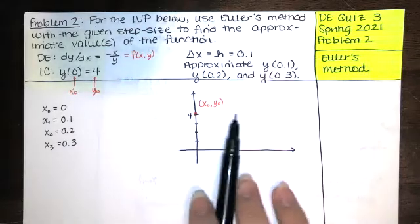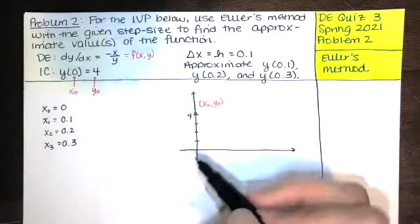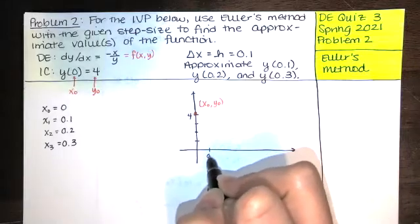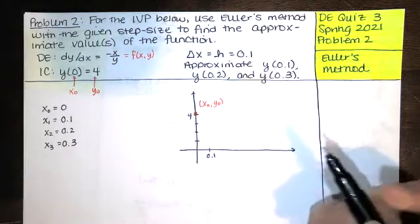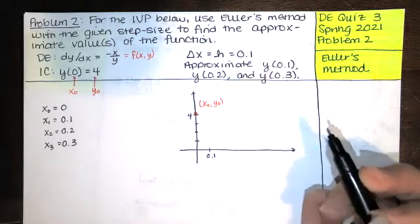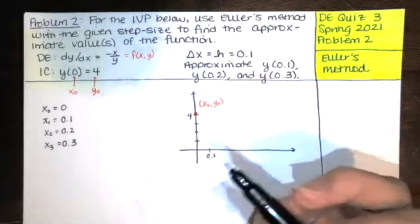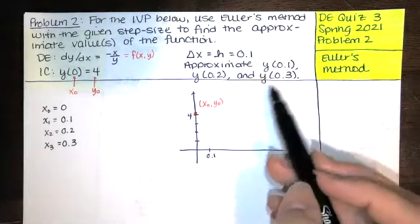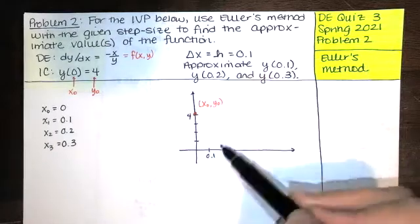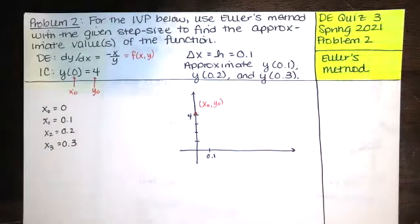If I find a nearby point on the tangent line at, say, x equals 0.1, that point is likely to be very close to the solution curve, making it a good approximation of the y value at 0.1. That's how this works.